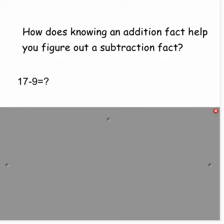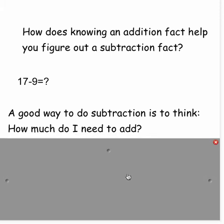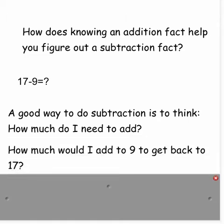How does knowing an addition fact help you figure out a subtraction fact? 17 minus 9 equals. A good way to do subtraction is to think, how much do I need to add? How much would I add to 9 to get back to 17? Think about your fact triangles. When we use our fact triangles, it helps our brain create a picture of this type of problem. If I know my facts and visualize the fact triangle, my 17 would be at the top because it's the largest number. One corner I would have a 9. I would just need to think, how much here in this corner would I need to add to this 9 to get up to 17? The answer is 8.